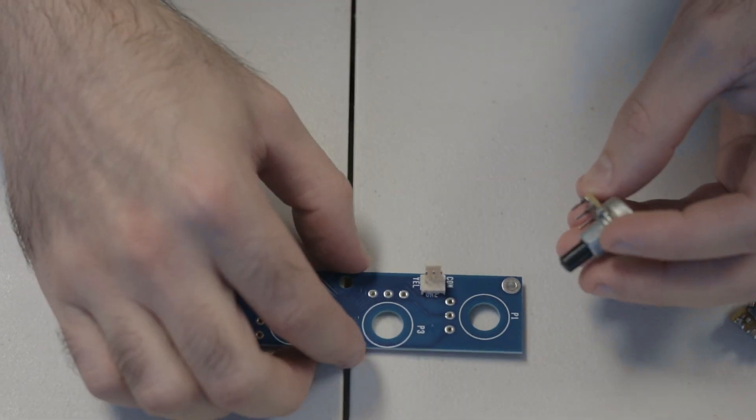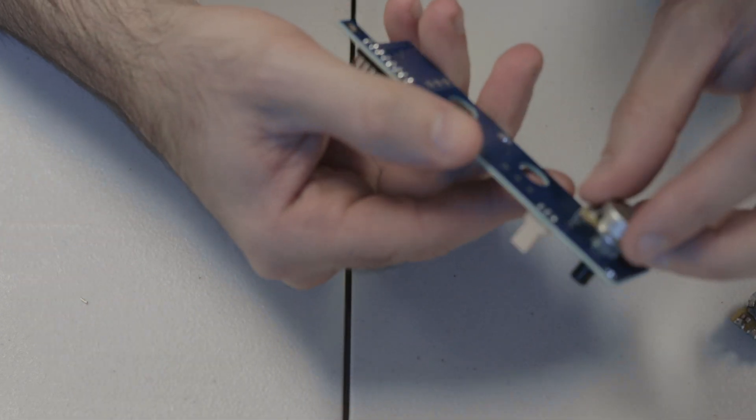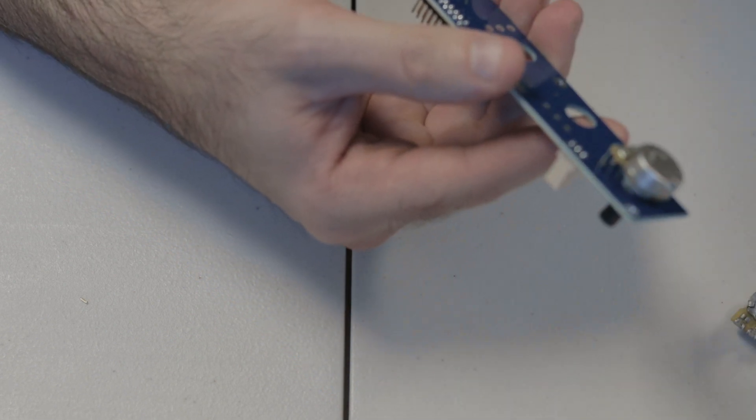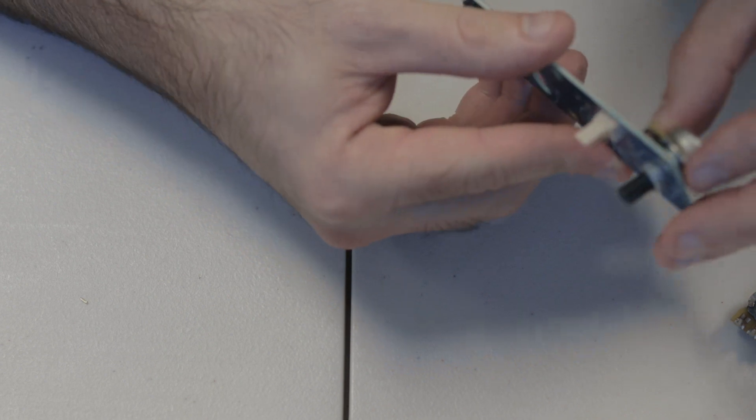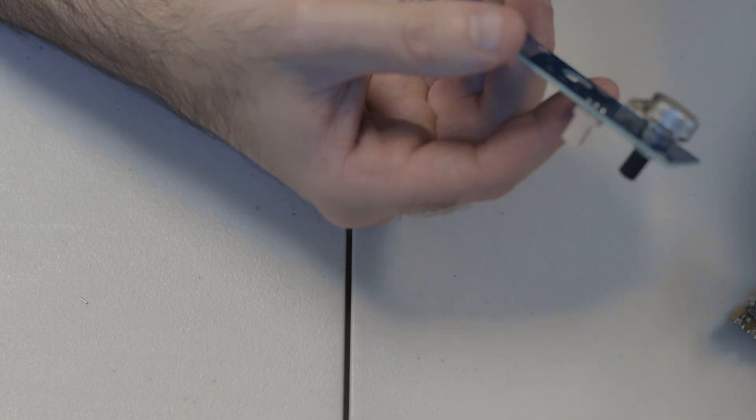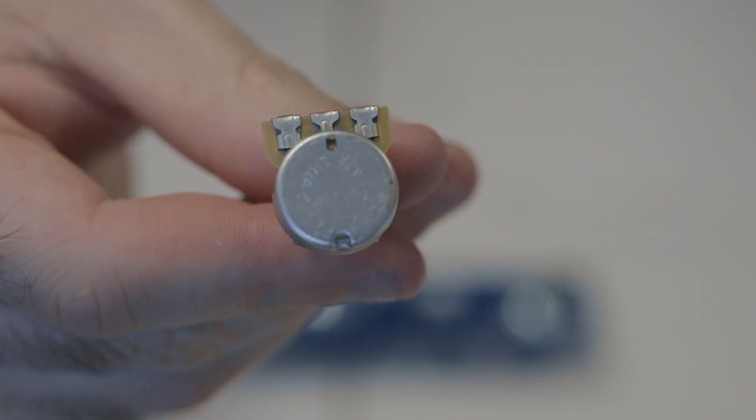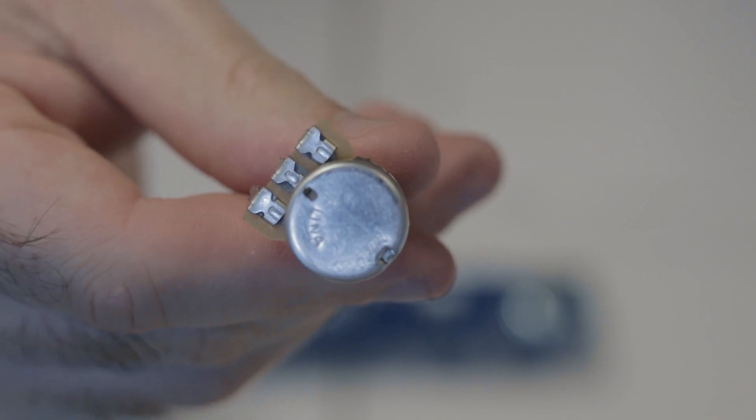And then next up we have to put in the potentiometers. So these are the gain boost or cut potentiometers. And just make sure at position one and position three, you use the 10KA potentiometers, and at position two, which is the bottom one, you use the 47KA potentiometer. Just make sure you get those right.